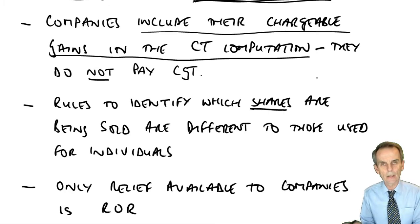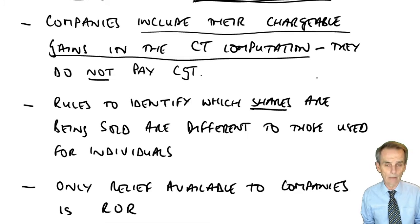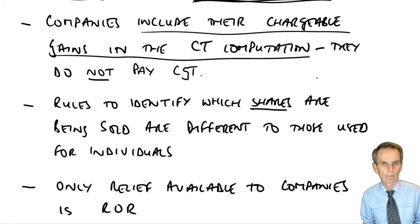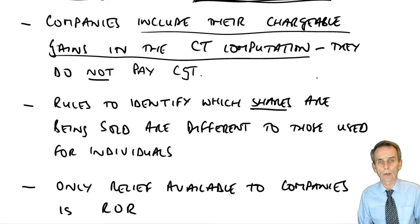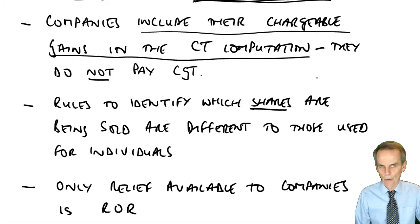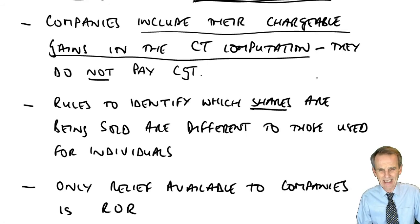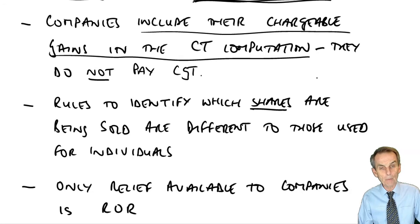What will happen in an exam question is they're likely to give you two indexation factors — maybe the disposal took place in January 2021. So they give you an indexation factor from date of acquisition to December 2017, and another one from date of acquisition all the way through to the date of disposal in January 2021. Do not use the later one. You know that the latest date to which indexation allowance will be available is December 2017. Apply that indexation factor to the allowable cost. That's the deduction from your basic gains calculation to give you a chargeable gain.